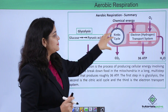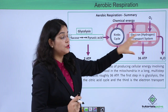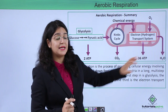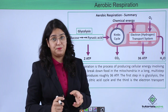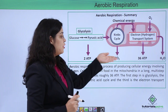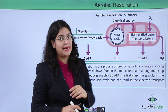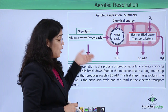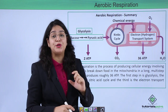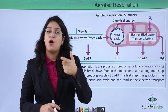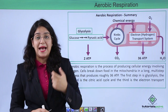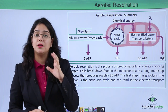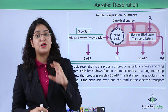In the Krebs cycle and electron transport chain, it produces 36 ATP along with carbon dioxide and H₂O. Our body produces this oxygen and ATP through the continuous function of our heart and lungs.